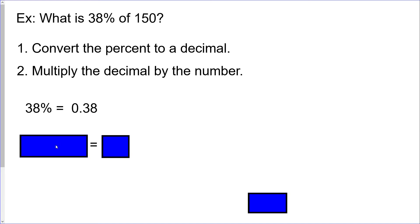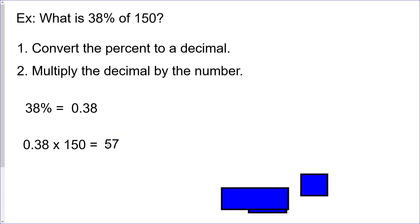And then you take your number there, your decimal that you just found, and multiply it by your other number. So 0.38 times 150 and then your number is 57.